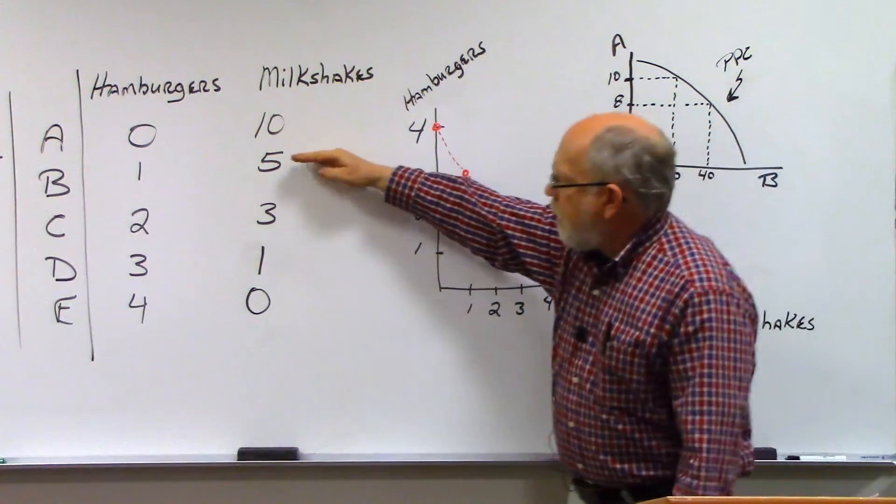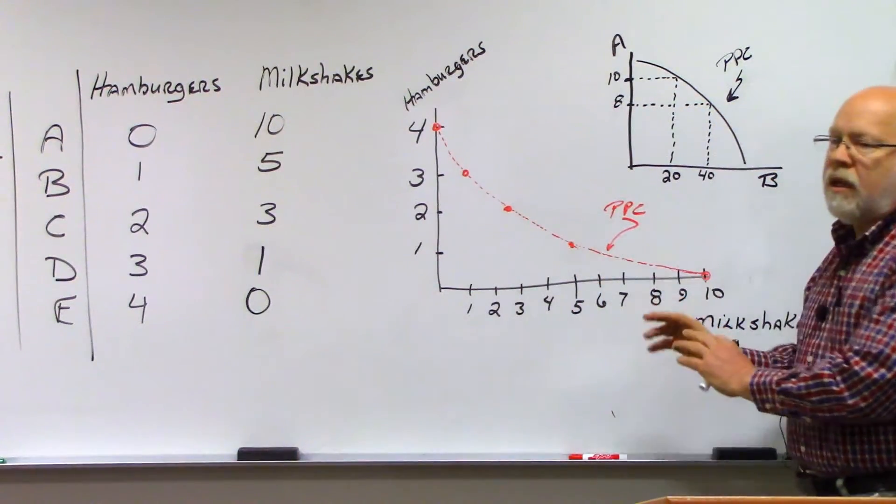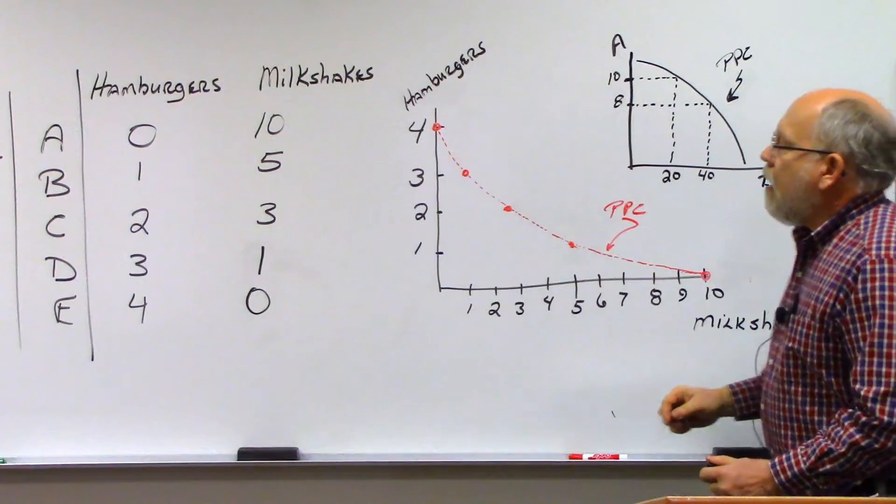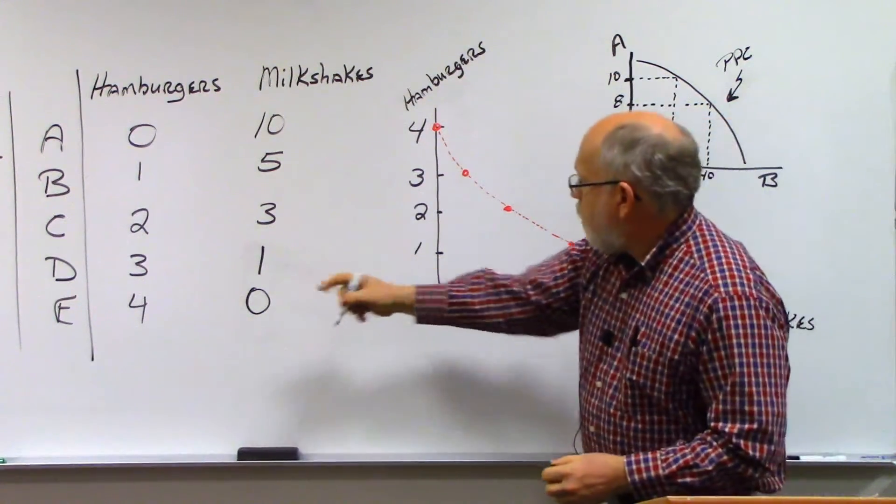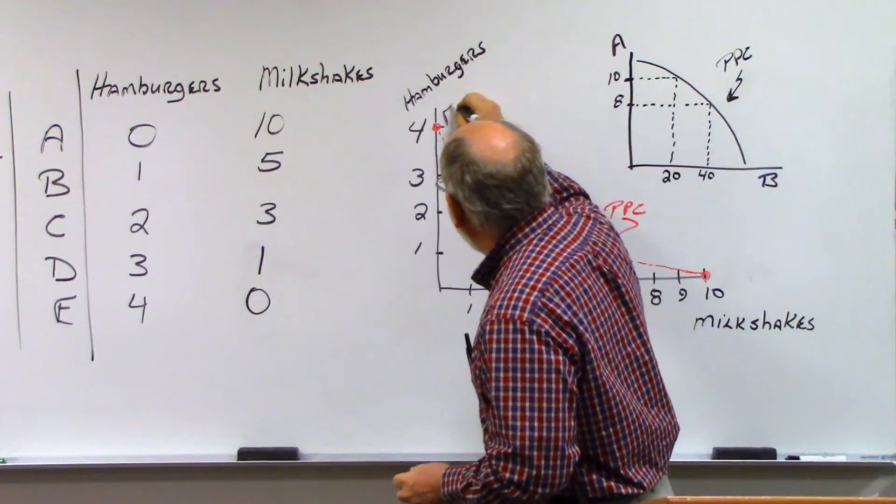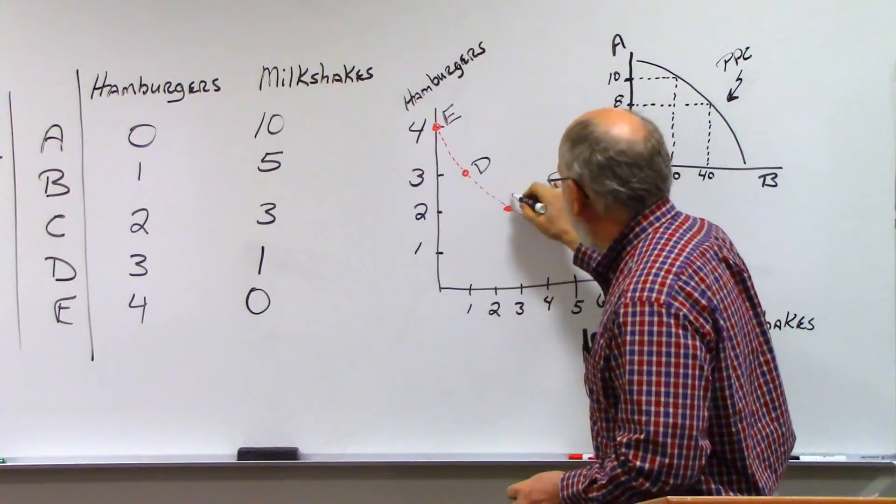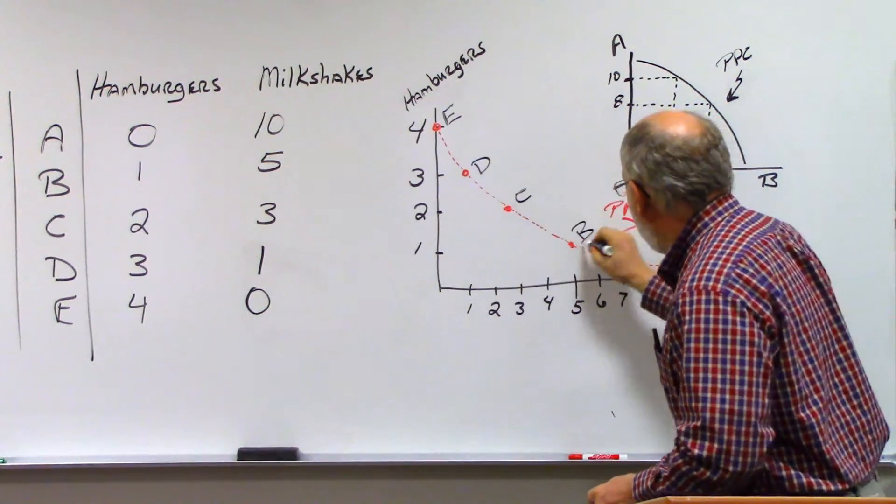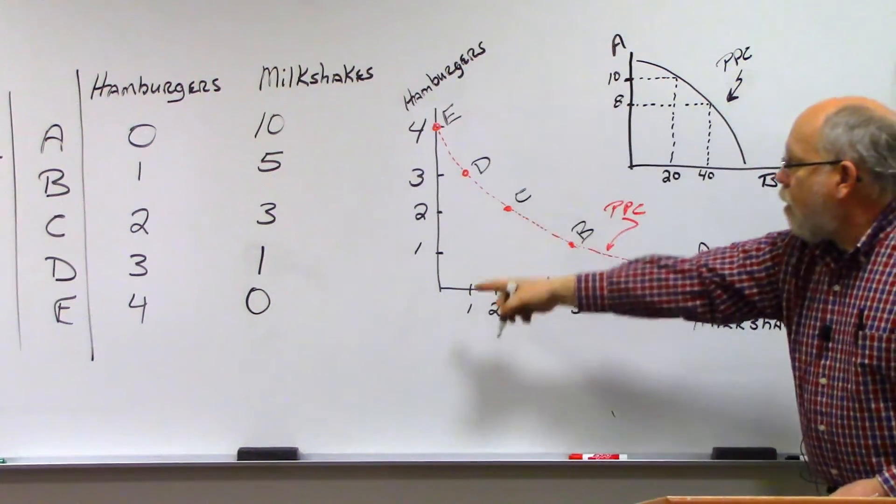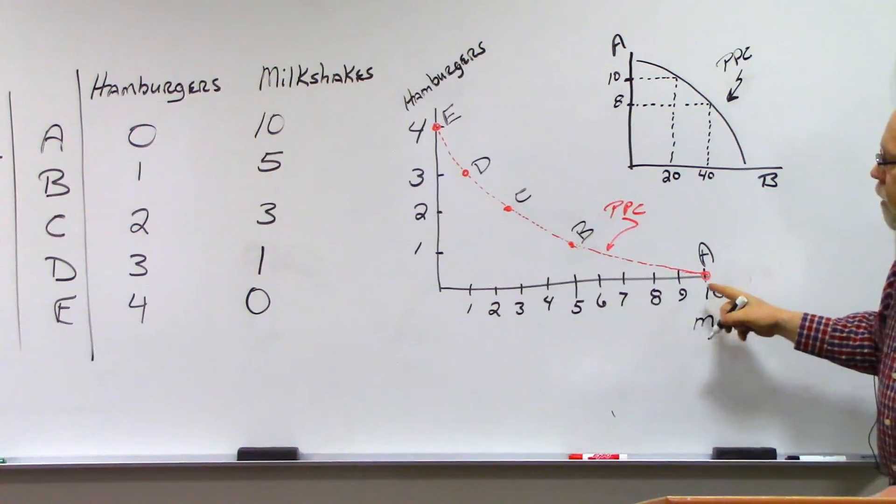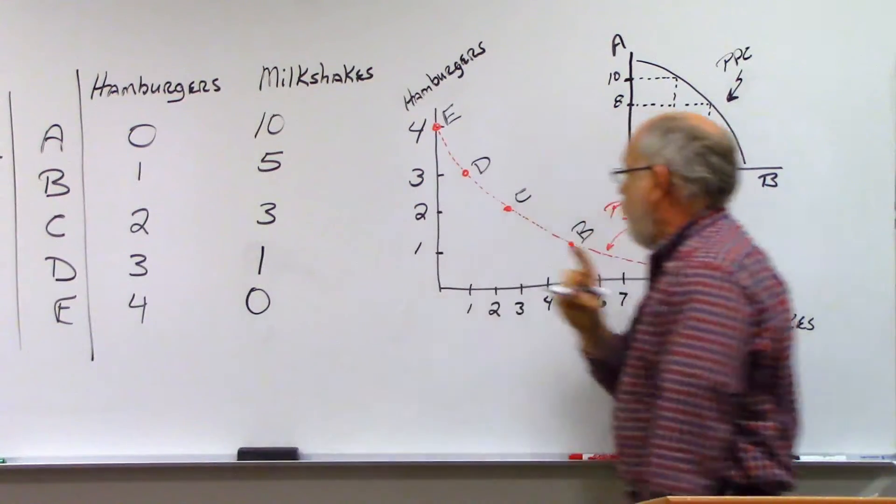And I put some points in here, in between, and I just made these up. And again, it's not a very realistic example, but it will work mathematically. We would go to point E, four and zero, this would be point E, and then this would be D, and this would be C, and B, and A. So A would be zero hamburgers, 10 milkshakes. Point E would be four hamburgers, and zero milkshakes.